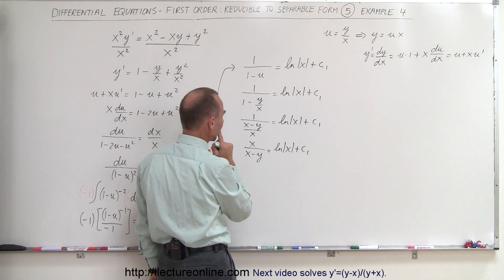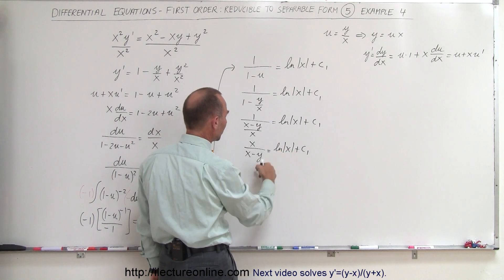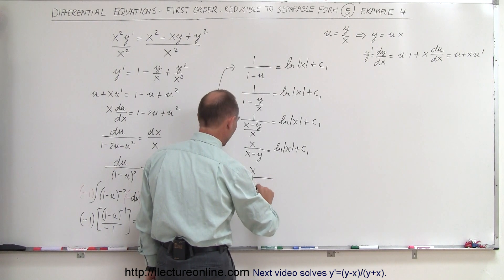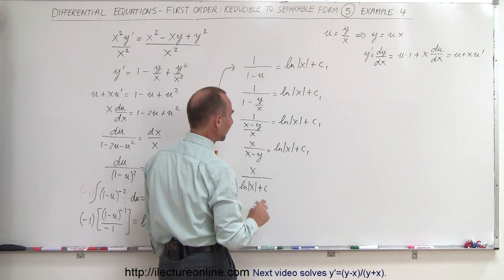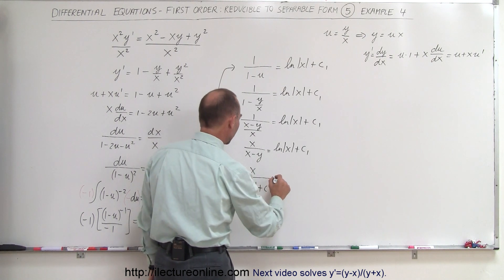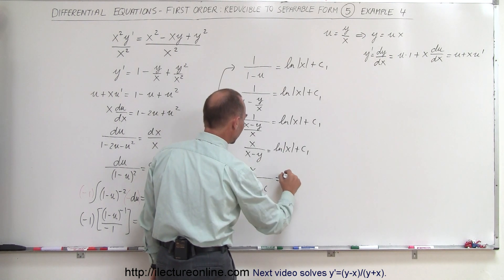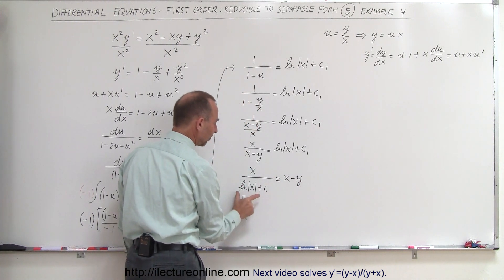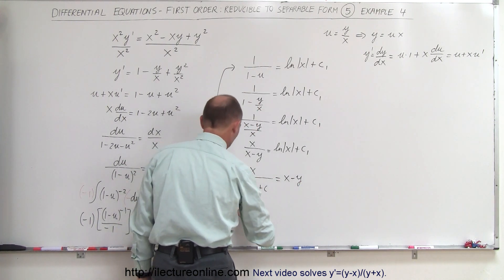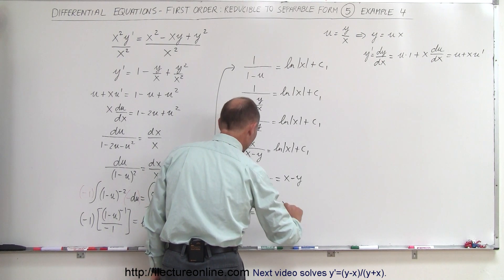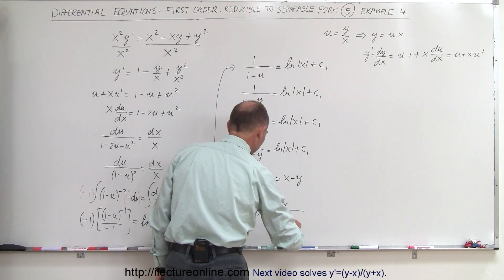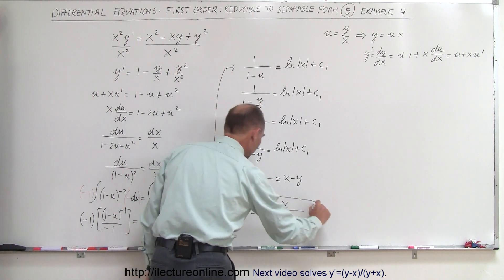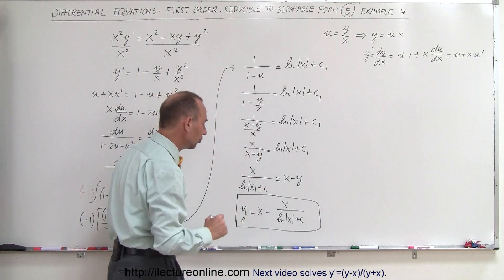Now it's just an algebraic exercise. We move terms around: x divided by (natural log of x plus c) equals x minus y. Bringing the minus y to the left side and the other term to the right side, we get y equals x minus x divided by (natural log of x plus c). And there we have the final solution.